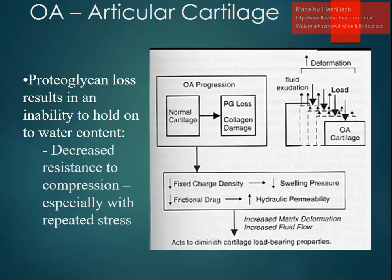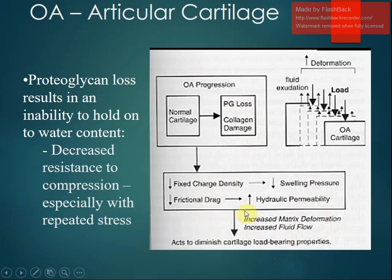Proteoglycan loss results in the inability to hold water content. As degenerative changes occur there is decreased resistance to compression, especially with repeated stress. The flow chart shows PG and collagen damage, PG loss, decreased charge density, swelling pressure, increased hydraulic permeability, increased matrix deformation and fluid flow, all ultimately diminishing the cartilage load-bearing properties.